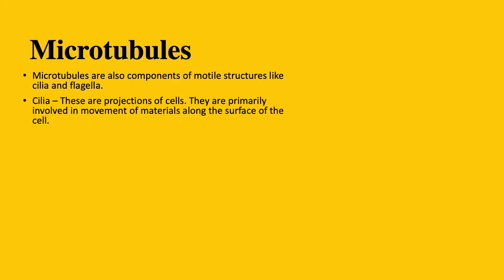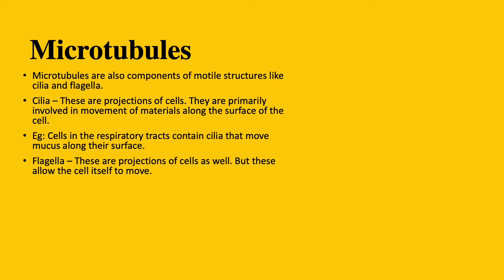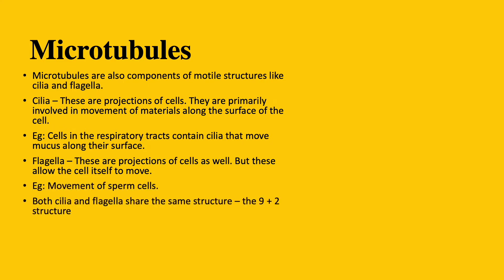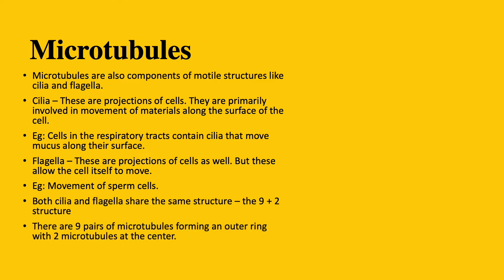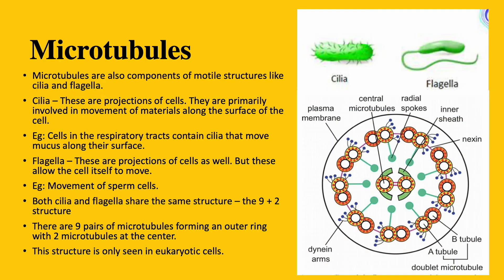Microtubules are also part of cilia and flagella. Just as a recap, cilia appear as projections of cells. They allow materials that are in contact with cells to be moved. As an example, you can think of the cells found in our respiratory tract that move their cilia in order to move mucus. Like cilia, flagella are projections of cells as well, but each cell only has one flagellum, and its goal is to move the cell itself. So the cell moves from one place to another through the movement of the flagella.